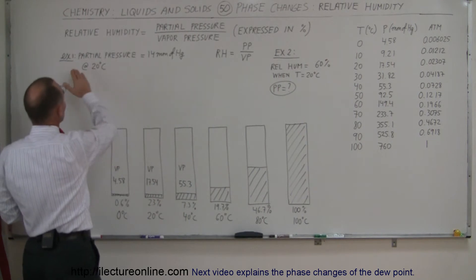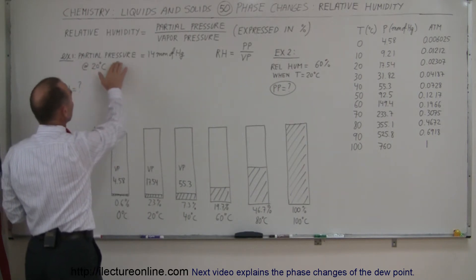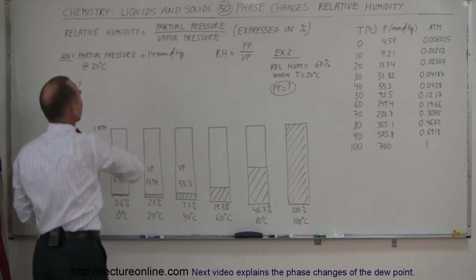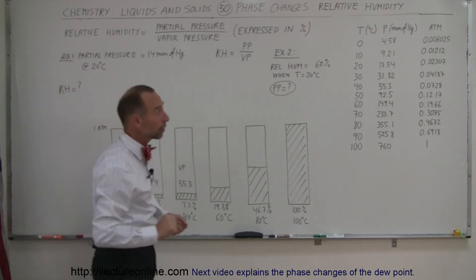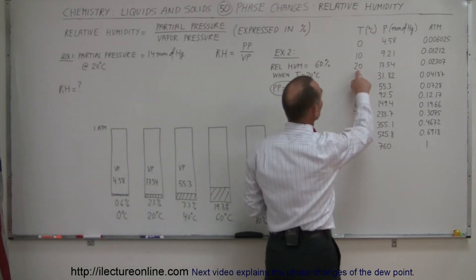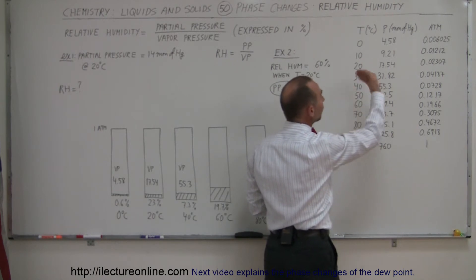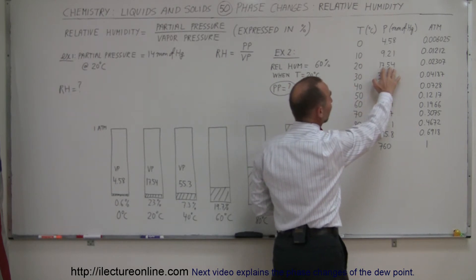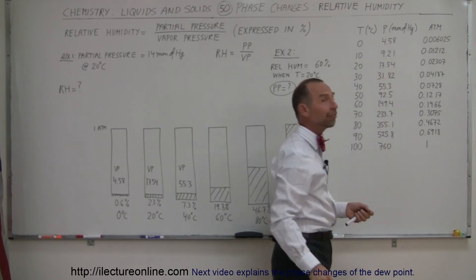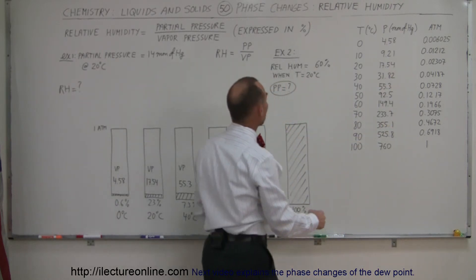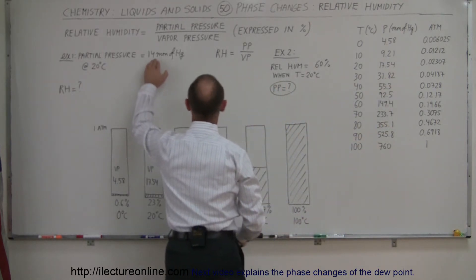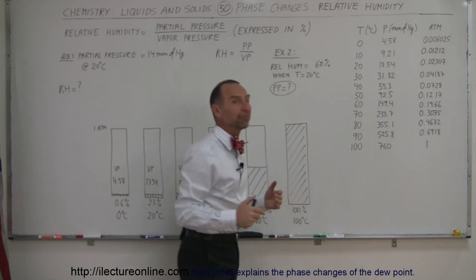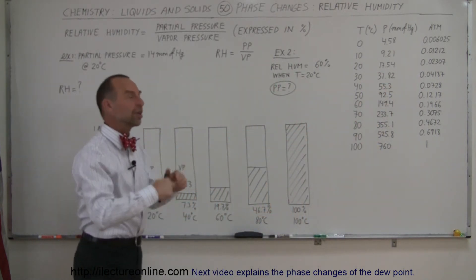For example, let's say the partial pressure is 14 millimeters of mercury at 20 degrees centigrade. Now let's look at the table here — at 20 degrees centigrade, when the air is fully saturated with water, it would have a vapor pressure of 17.54 millimeters of mercury. So it only has 14 millimeters of mercury but it could have as much as 17.54 millimeters, so it's not quite saturated yet.